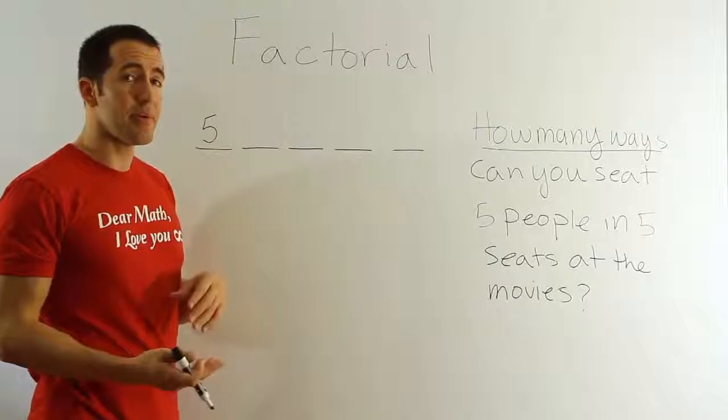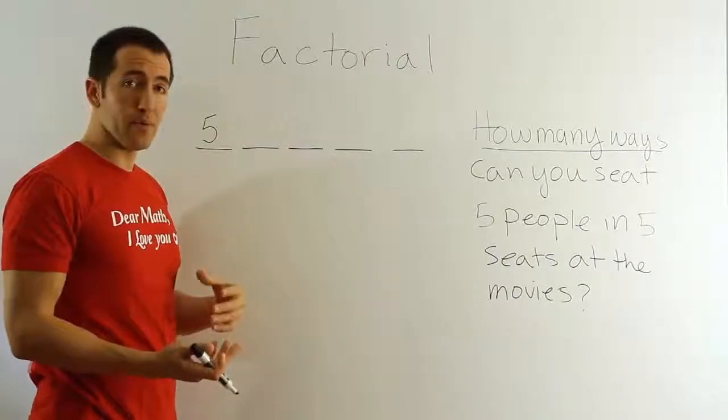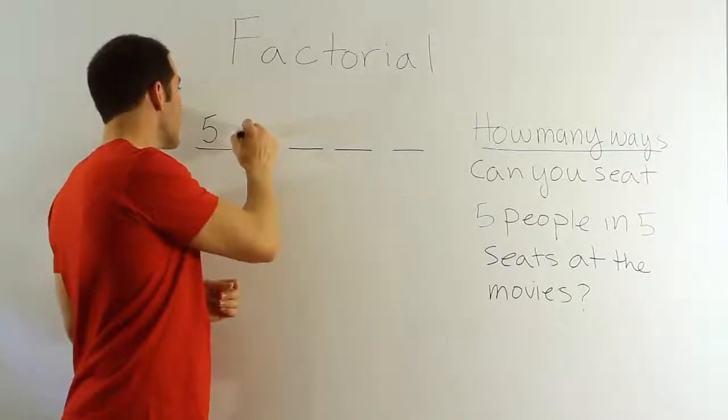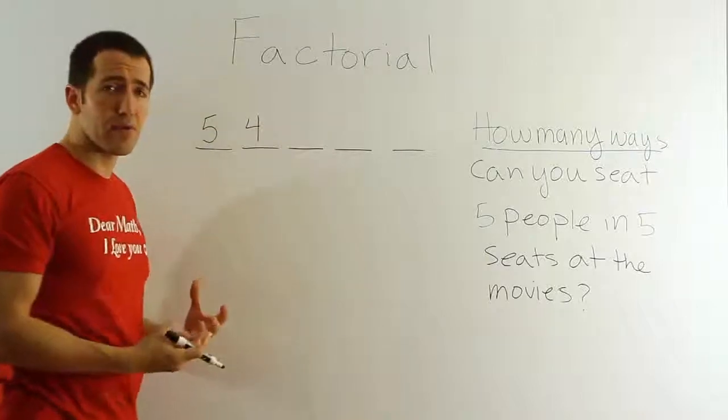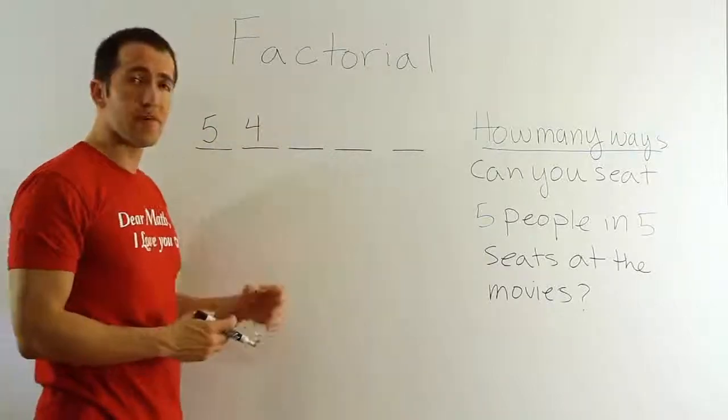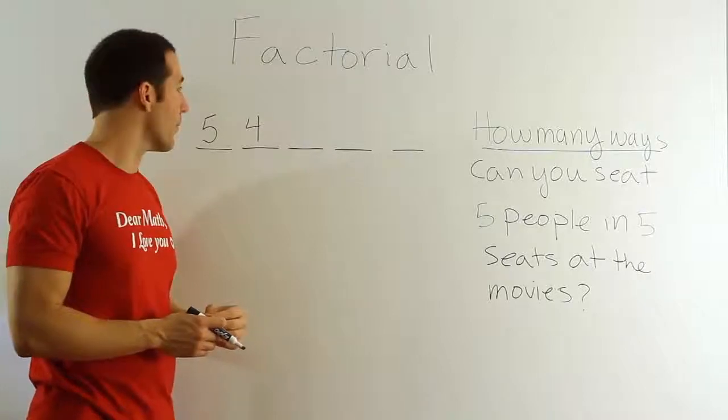But once we sit a person there, then when we get to the next seat, how many people are left to be sat? Well, only four, so we have four choices for the next seat. So this is fundamental counting rule. We break it up into steps, and then we figure out the number of ways we can accomplish the steps, one by one.